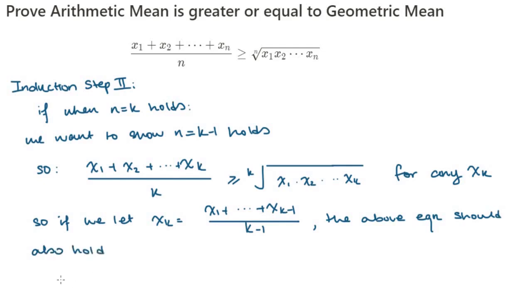So what if we let xₖ be a very specific term: (x₁ + x₂ + ⋯ + xₖ₋₁)/(k − 1).